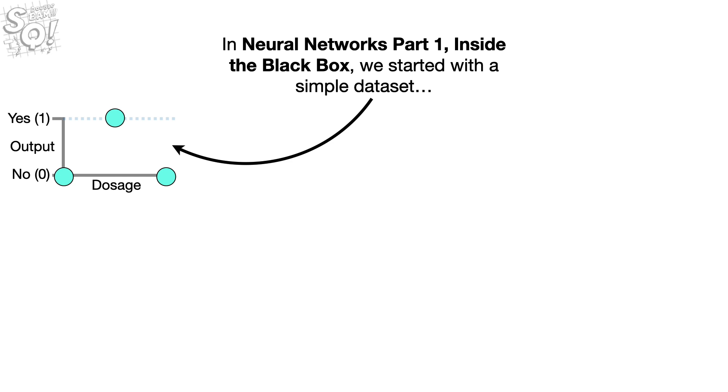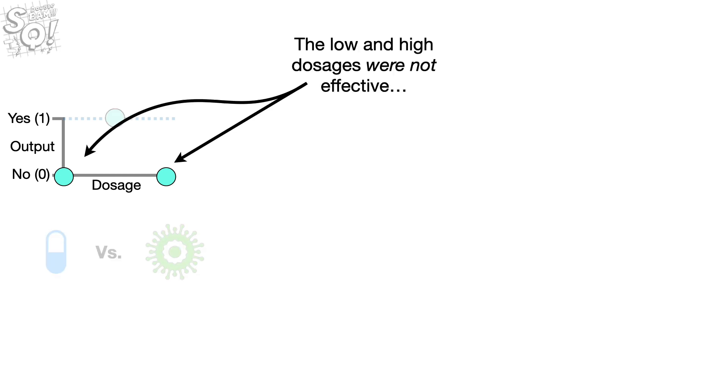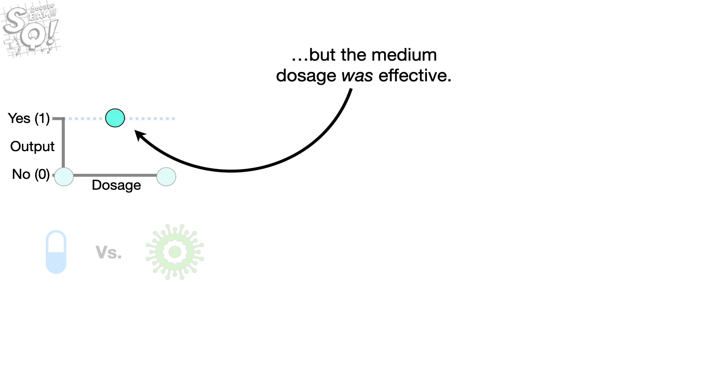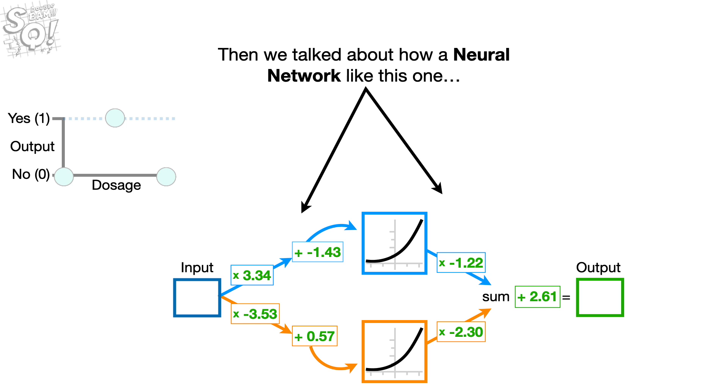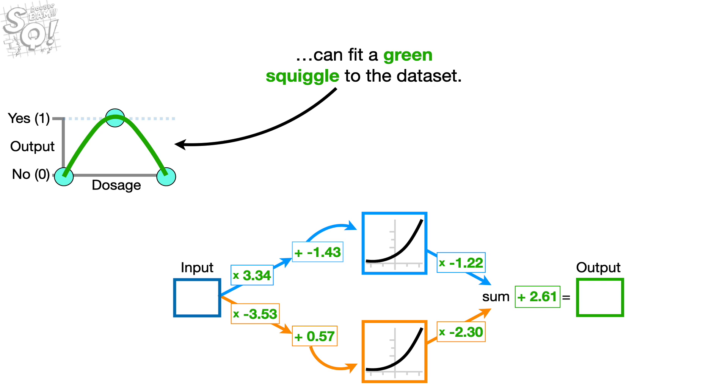In Neural Networks Part 1, Inside the Black Box, we started with a simple data set that showed whether or not different drug dosages were effective against a virus. The low and high dosages were not effective, but the medium dosage was effective. Then we talked about how a neural network like this one, that uses the soft plus activation function in the hidden layer, can fit a green squiggle to the data set. Bam.